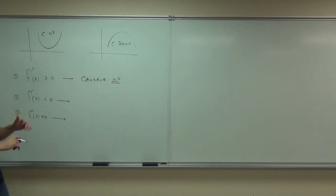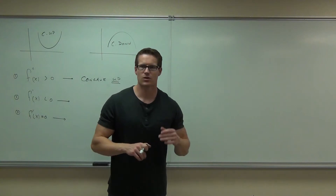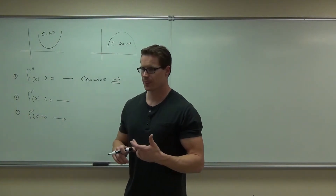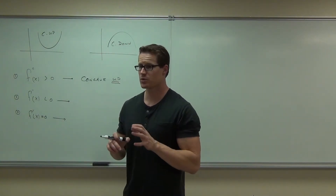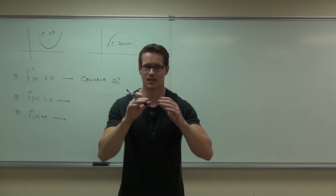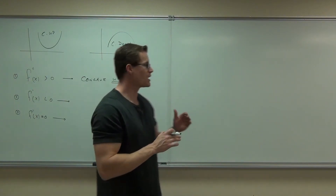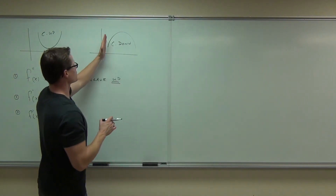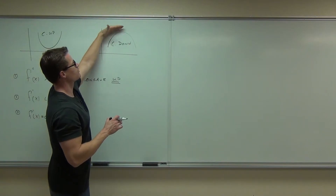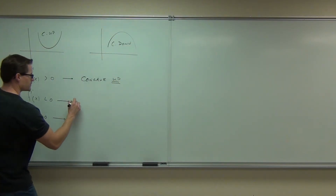If our second derivative is negative, that means the rate of change of our slope is negative — the slope is actually decreasing. The slope goes from positive to zero to negative. That means it's a concave down shape.